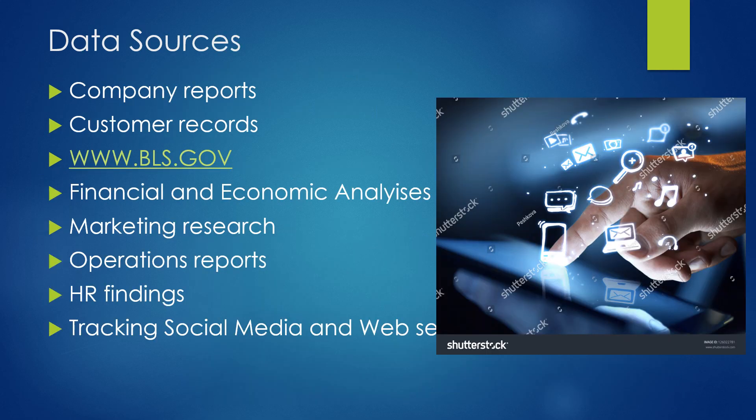Where do we get our data? From company reports — annual and quarterly reports — and customer records, finding out about their age and income. We can go to BLS.gov, the Bureau of Labor and Statistics, which has a magnificent website with all kinds of data. We also have financial and economic analyses, marketing research, operations reports, human resource findings, and tracking activity on social media and websites.